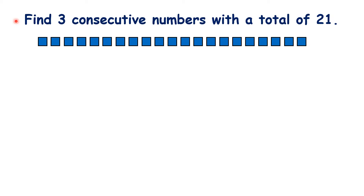Here we need to write three consecutive numbers with a total of 21. First, let's make sure we understand what consecutive numbers are. Consecutive numbers are basically going up in ones. So with 2, 3, 4 we have three consecutive numbers. Or with 99, 100 and 101 we have three consecutive numbers.